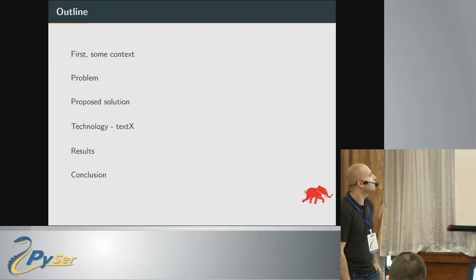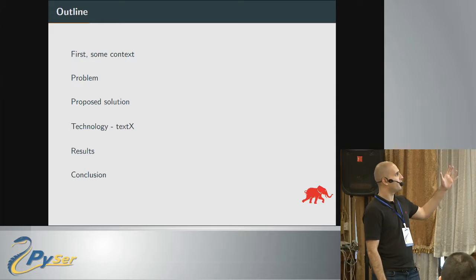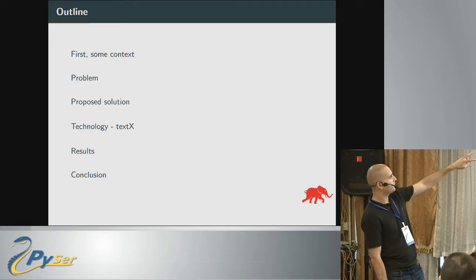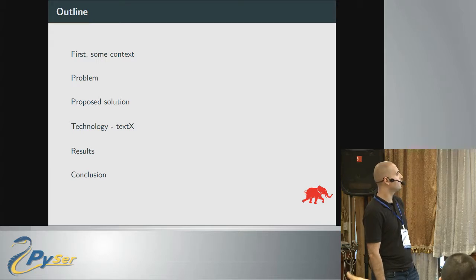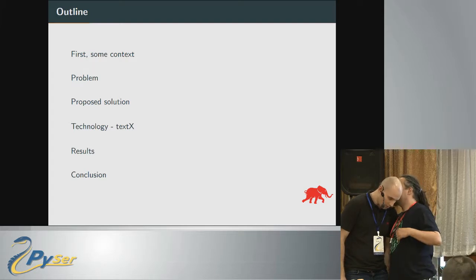This is a quick outline. First, I will present some context where we will define what we are doing in the company to better understand the problem. Then I will describe the concrete problem, the theoretical solution, the technology, and introduce the concrete library we used to implement the solution and compare the previous state with the solution.